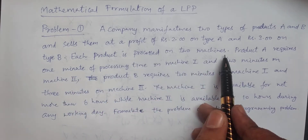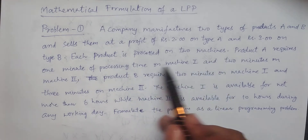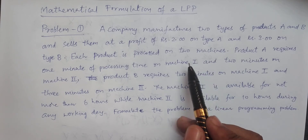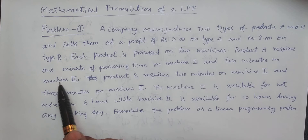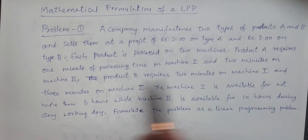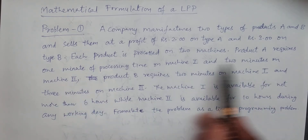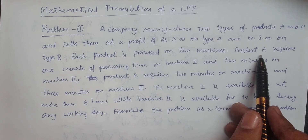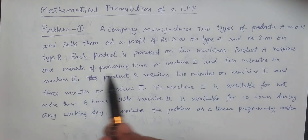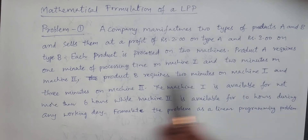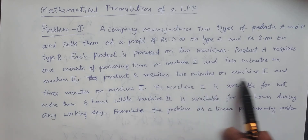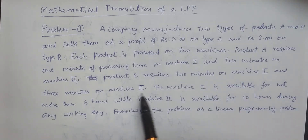Each product is processed on two machines. Product A requires one minute of processing time on machine 1 and two minutes on machine 2. Similarly, product B requires two minutes on machine 1 and three minutes on machine 2.